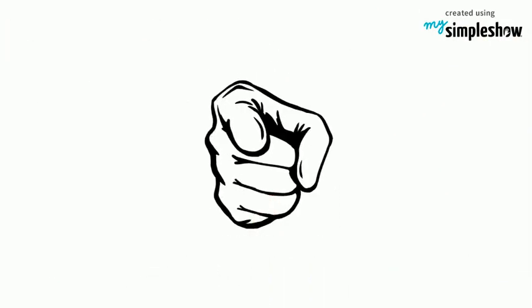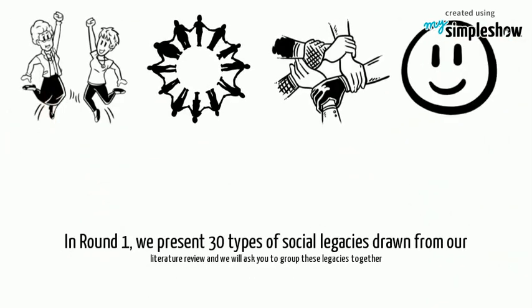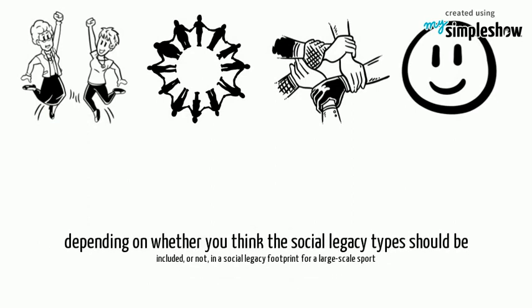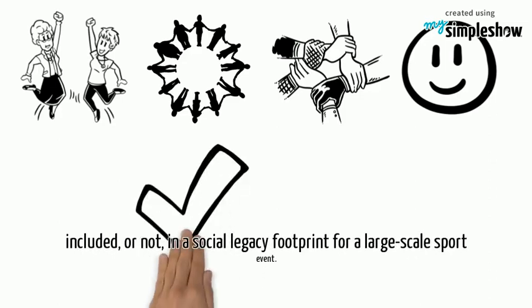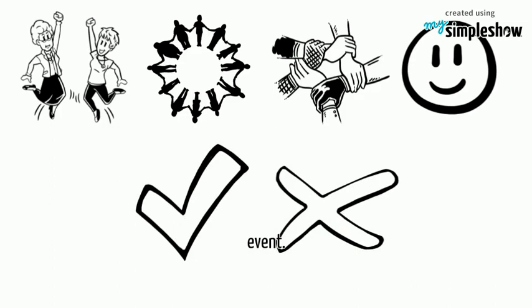You are one of them. In round one we present 30 types of social legacies drawn from our literature review, and we will ask you to group these legacies together depending on whether you think the social legacy types should be included or not in a social legacy footprint for a large scout support event.